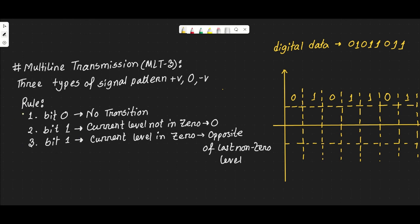We have three rules. The first rule: for digital bit zero, we have no transition. For bit one, there are two rules. The first rule checks the current level. The second rule involves a zero transition — if the current level is zero, we transition to the opposite of the last non-zero level.